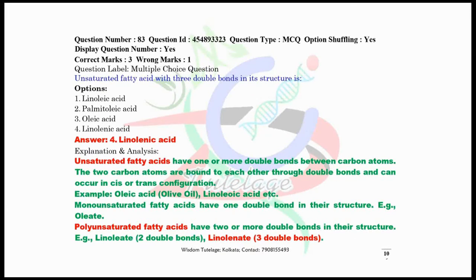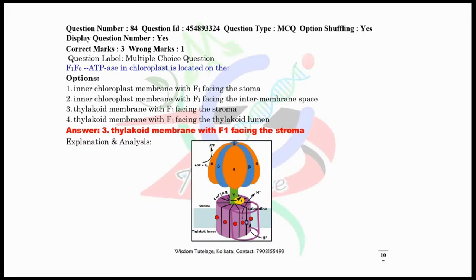Question number 83, unsaturated fatty acid with three double bonds in its structure is linolenic acid, option number four. I have given here the different types of unsaturated fatty acids like oleic acid, linoleic acid. Some are monounsaturated fatty acids like oleic acid, and some are polyunsaturated fatty acids like linoleate or linoleinate.